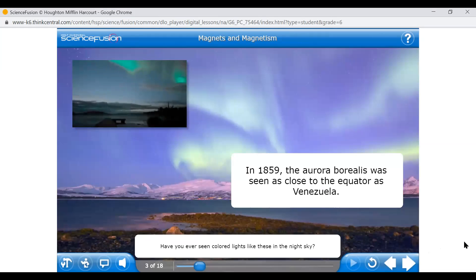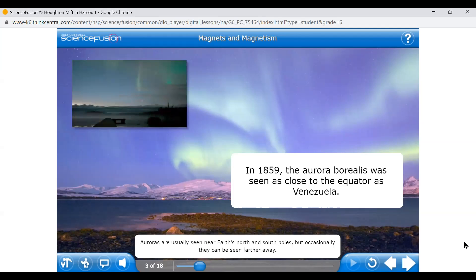Have you ever seen colored lights like these in the night sky? This is an aurora, which occurs when charged particles from the sun are pulled into the atmosphere by Earth's magnetic field. Auroras are usually seen near Earth's north and south poles, but occasionally they can be seen farther away. The full magnetic field around Earth is the magnetosphere. It protects Earth from charged particles and produces the brilliant glows of auroras in the night sky.